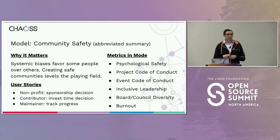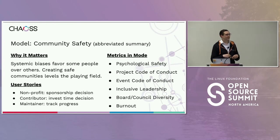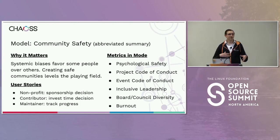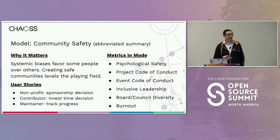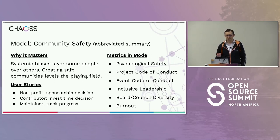Nonprofits might use these metrics to decide which open source projects to sponsor. Contributors may use them to decide where they want to make an impact. Maintainers want to track progress as they work to improve their community. Metrics in this model include psychological safety, code of conduct quality, inclusive leadership, board and council diversity, and burnout — keeping contributors healthy. Each one has a definition and description of how it can be measured.